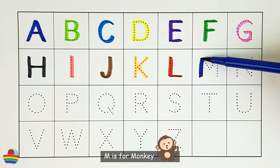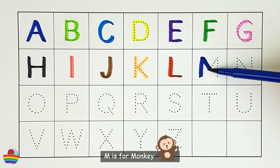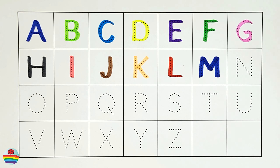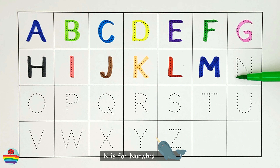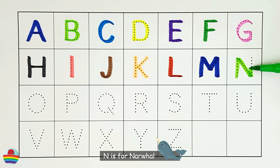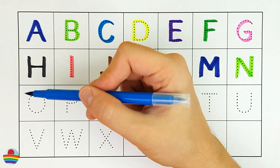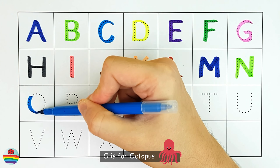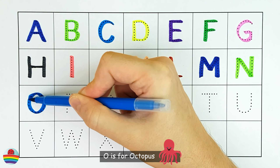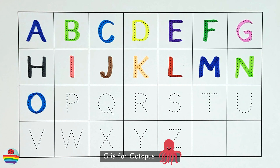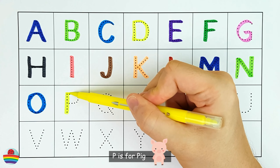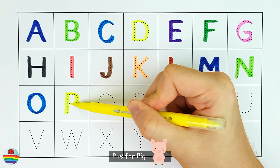M. M is for monkey. N. N is for narwhal. O. O is for octopus. P. P is for pig.